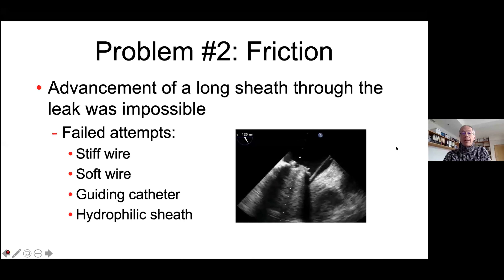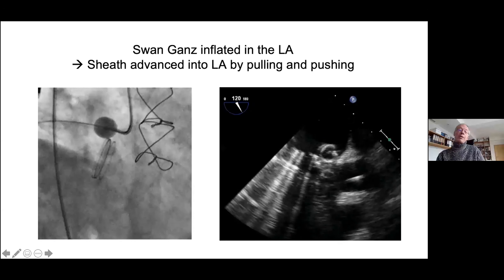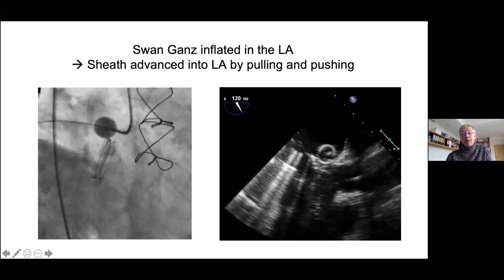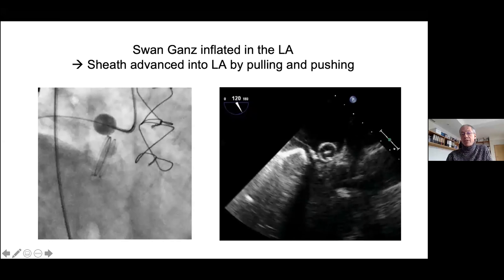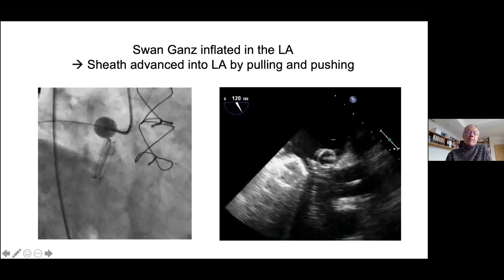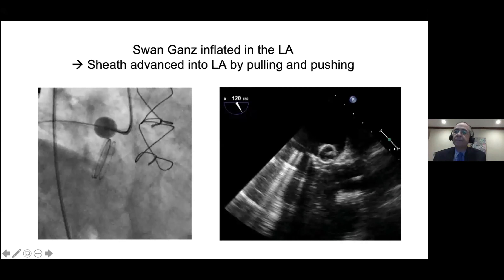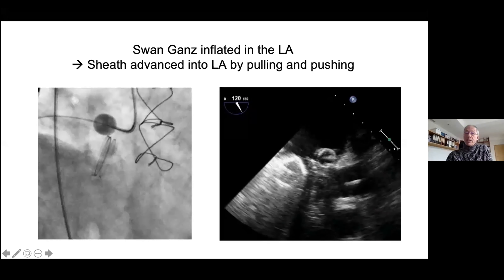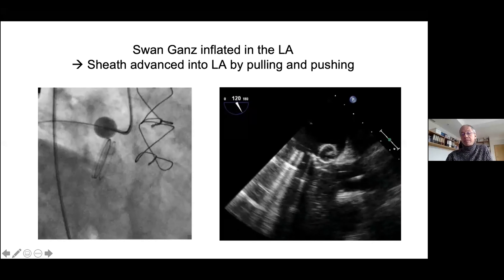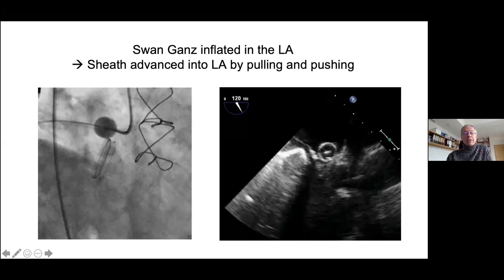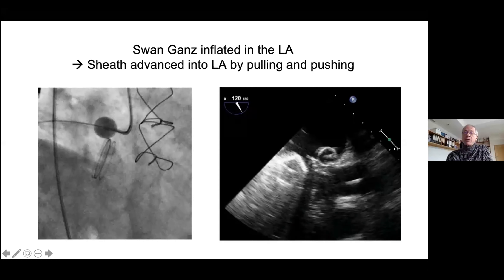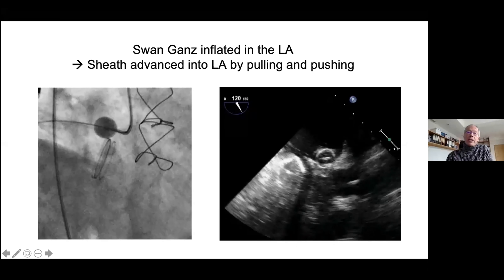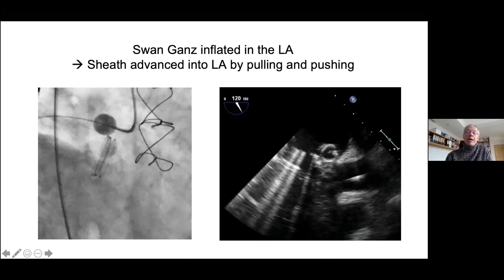Any other idea? Try a different crossing point — that's a good point, but this was just one big hole. Sometimes you have sutures going across these leaks and you can try different spaces there. What I did was advance a Swan-Ganz catheter into the left atrium and inflate the balloon there. The Swan-Ganz was in a sheath, and then I could advance the sheath into the left atrium by pulling and pushing using the balloon as a kind of guide.